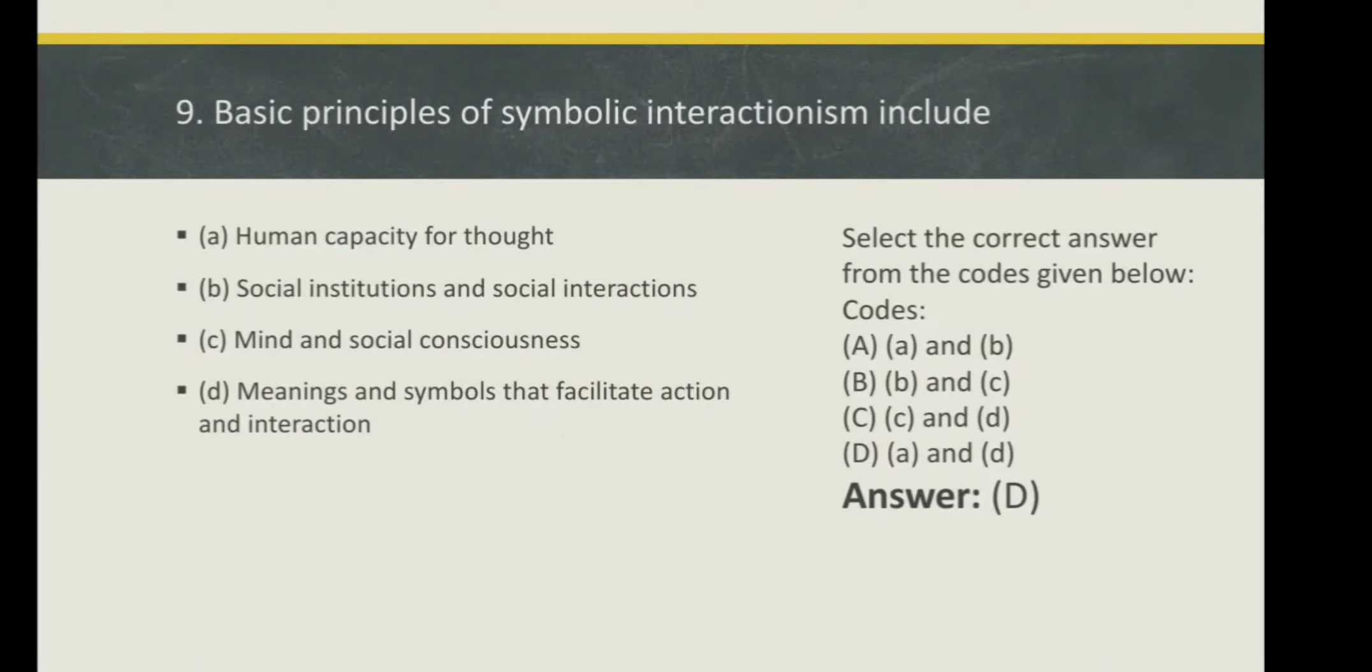Basic principles of symbolic interactionism include: Option A: Human capacity for thought. Option B: Social institutions and social interactions. Option C: Mind and social consciousness.